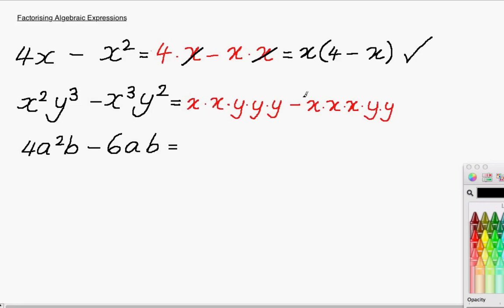There are two x's here, but three here. That means in both of them, we have a common factor of x squared. We can pull out two x's from here and two x's from here. So at the front of our bracket now, we'll have x squared.